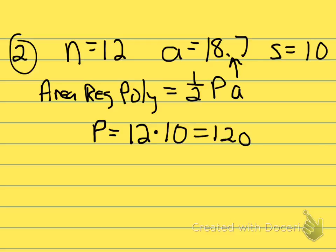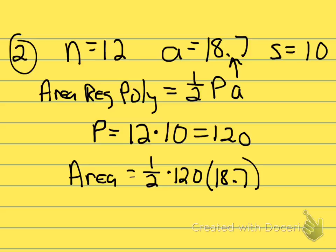So we're ready to get to our answer. The area that we're looking for here is going to be one half of the perimeter, 120, multiplied by 18.7. And if you put that in your calculator, you're going to get 1,122 square units.